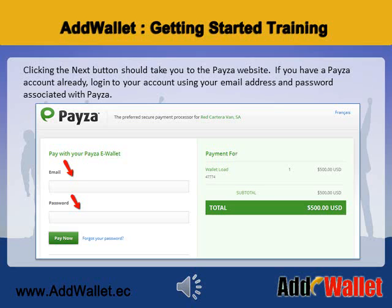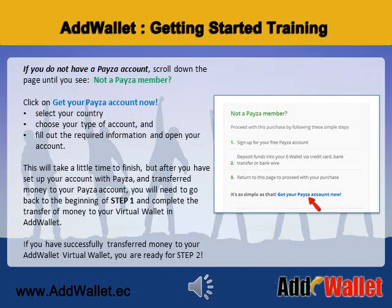Clicking the next button should take you to the PESA website. If you have a PESA account already, log in to your account using your email address and password associated with PESA. If you do not have a PESA account, scroll down the page until you see 'Not a PESA Member' and click on 'Get Your PESA Account Now.' You will then select your country, choose your type of account, and fill out the required information and open your account. After you have set up your account with PESA and transferred money to your PESA account, you will need to go back to the beginning of Step 1 and complete the transfer of money to your Virtual Wallet in AdWallet.